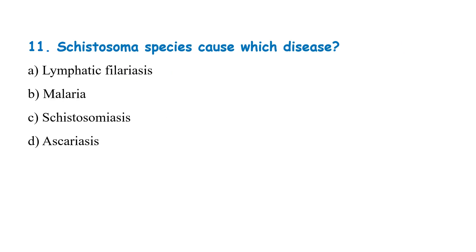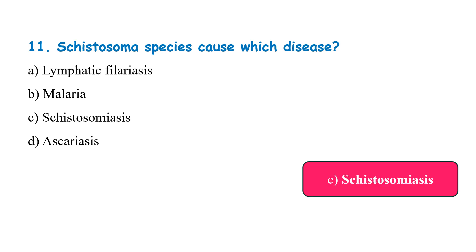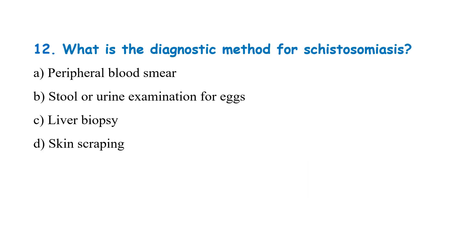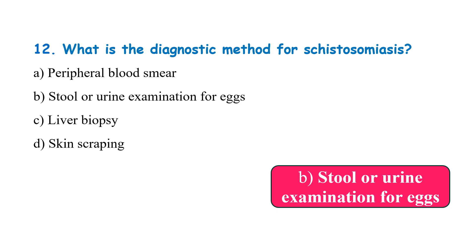Schistosoma species cause which disease? Lymphatic filariasis, malaria, schistosomiasis, or ascariasis? The correct answer is schistosomiasis. What is the diagnostic method for schistosomiasis? Peripheral blood smear, stool or urine examination for eggs, liver biopsy, or skin scraping? The correct answer is stool or urine examination for eggs.